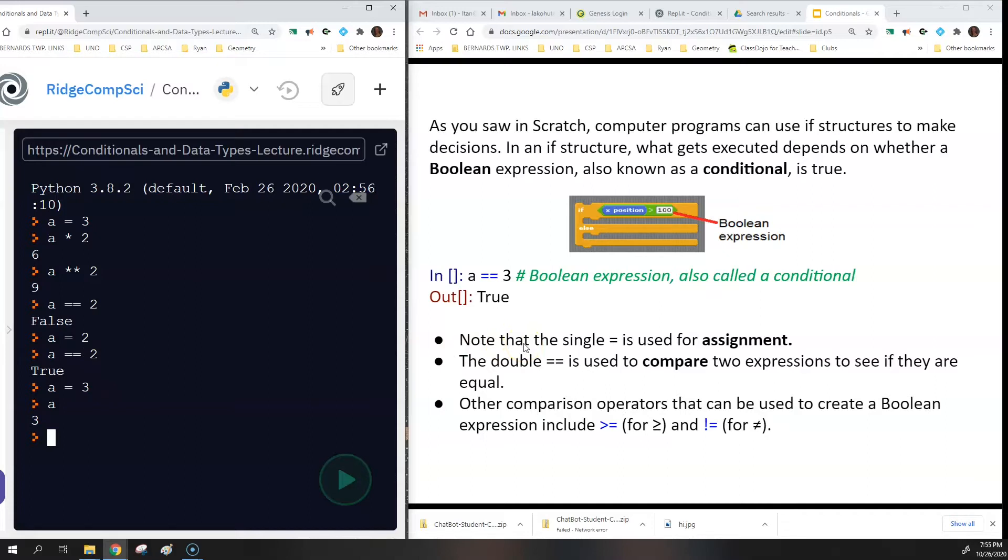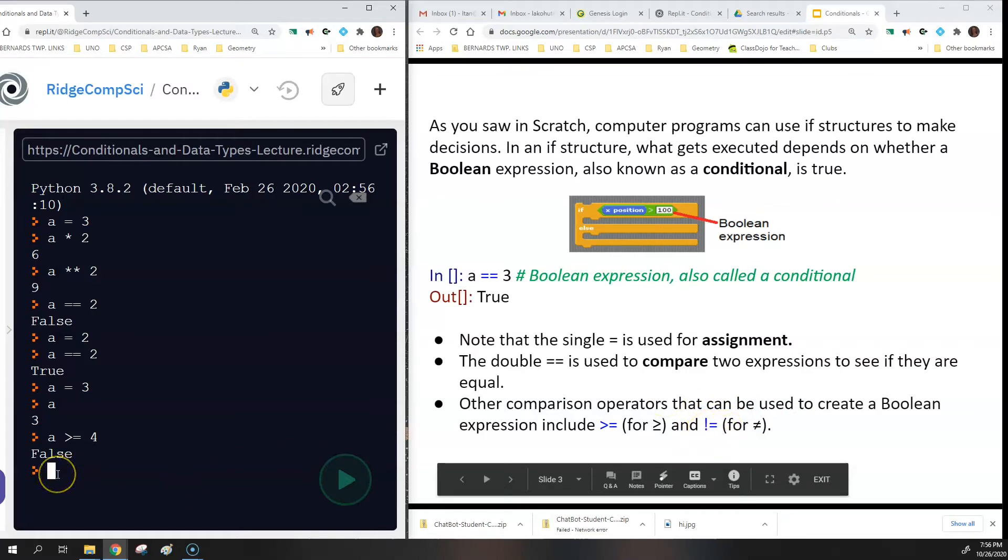So there are a bunch of other operators besides just double equals. There are other Boolean operators. For example, if you did greater than or equal to, then you could use the greater than sign and then the equal sign. So if I did something like A is greater than or equal to 4, that would return false because A is not greater than or equal to 4. You can do the same thing for less than or equal to. Then there's also an exclamation point. That exclamation point stands for not equal to. So if you did exclamation point equals, you get is A not equal to something. So if I said A exclamation point equal to 3, then that would return false because A is 3.